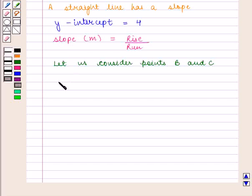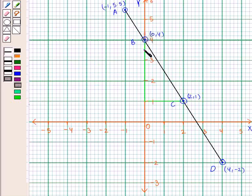So we say that slope, that is m, is given by rise of minus 3 units upon run of 2 units. As we have moved 3 units down so we have a rise of minus 3 and 2 units to the right so we have a run of 2 units.